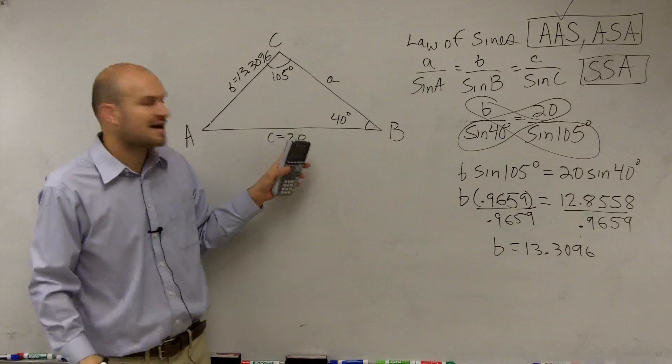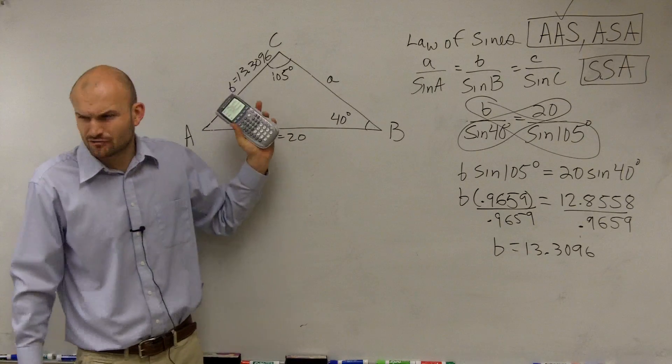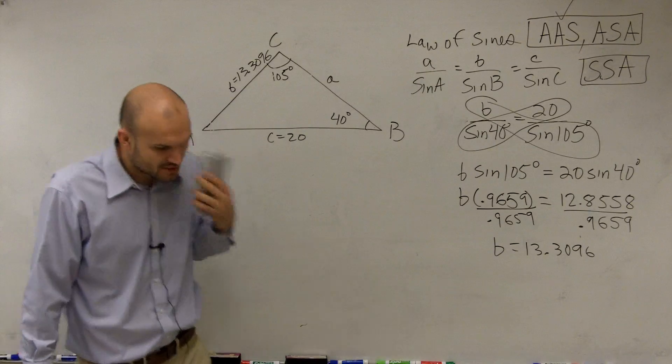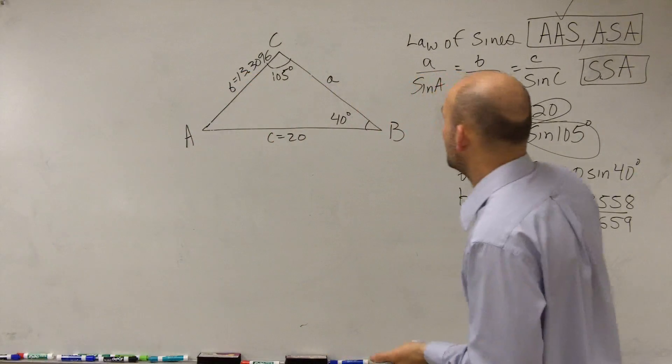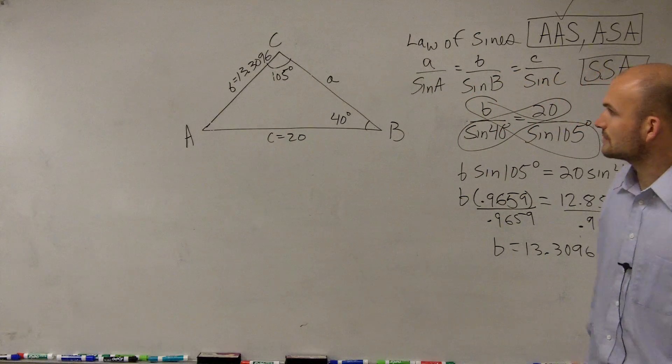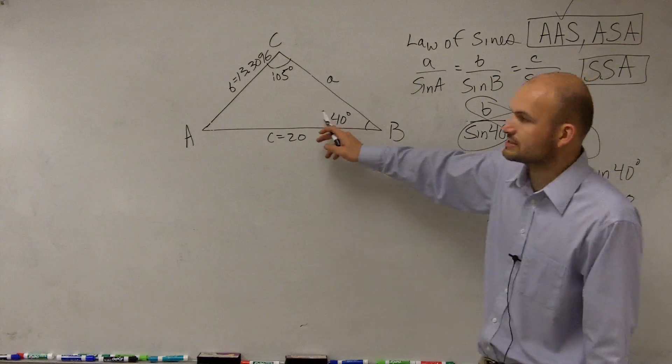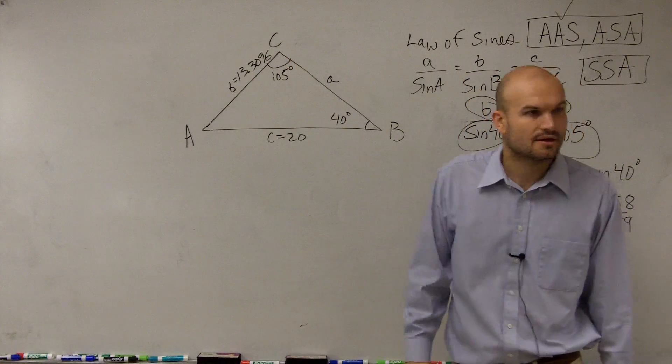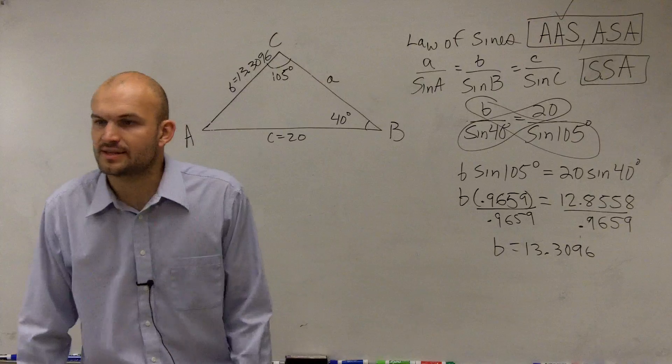So now I can say b equals 13.3096. And by looking at what the side length of c is, does that kind of make reasonable sense what it could be? Yeah. So that's going to make sense. And obviously, 40 degrees is smaller than 105 degrees. So we are going to have a smaller side length in there. So that kind of makes a little bit of sense in there.